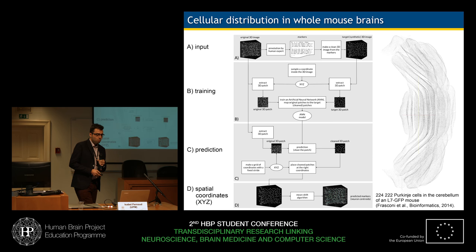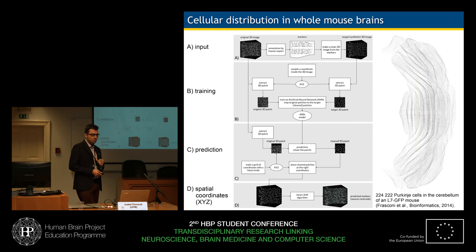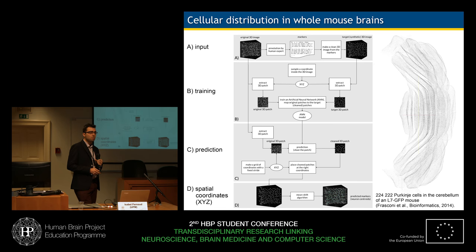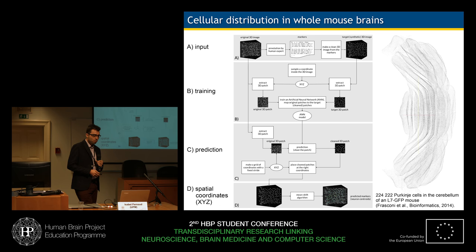To conclude, let me show you two quick examples of what our processing pipeline looks like. In the case of the whole mouse brain, during the manual annotation phase, we generate markers to pinpoint the centroids of individual neurons in the whole mouse brain tomography. These markers are used to train a neural network.